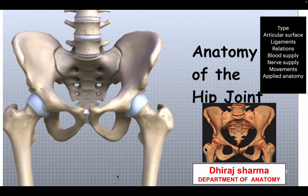Good morning to all the students. The topic for today's lecture is the hip joint. We will see the type, articular surface, ligaments, relations, blood supply, nerve supply, movements, and applied anatomy related with the hip joint.